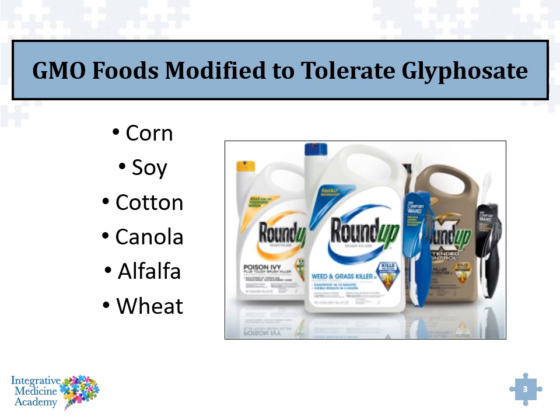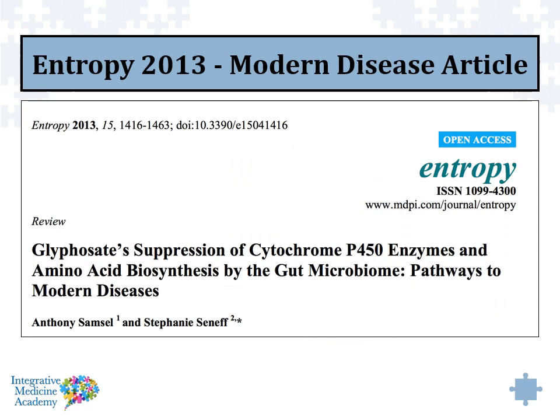Glyphosate is sprayed on various crops — corn, soy, cotton, canola, for example, are heavily sprayed. There was an interesting article in the journal Entropy back in 2013 that looked at glyphosate's ability to suppress cytochrome P450 enzymes, which is essentially phase one of our liver detoxification, and how this could lead to microbiome problems in the gut.